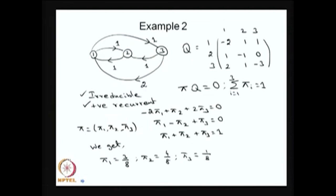Take the second example — also a finite state model. All states are communicating with all other states, therefore it is irreducible. Since it is a finite state model there is no null recurrence; it is positive recurrent. So I can solve πQ = 0 and summation of π = 1. There are three equations; I take the first two equations and one normalizing equation and solve to get π_1, π_2, π_3. This is the limiting and stationary distribution, since the model is irreducible positive recurrent.